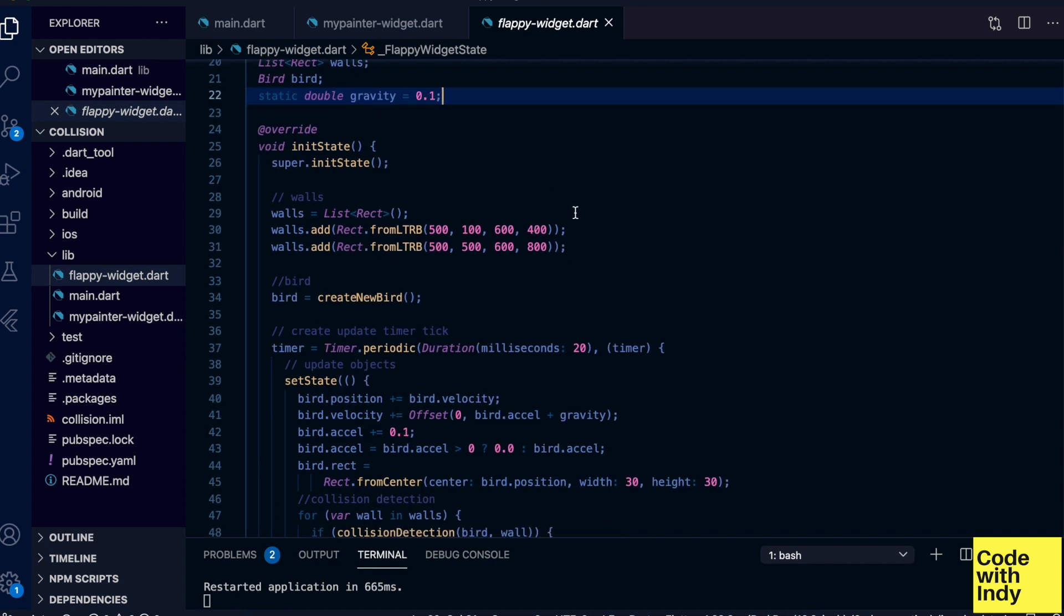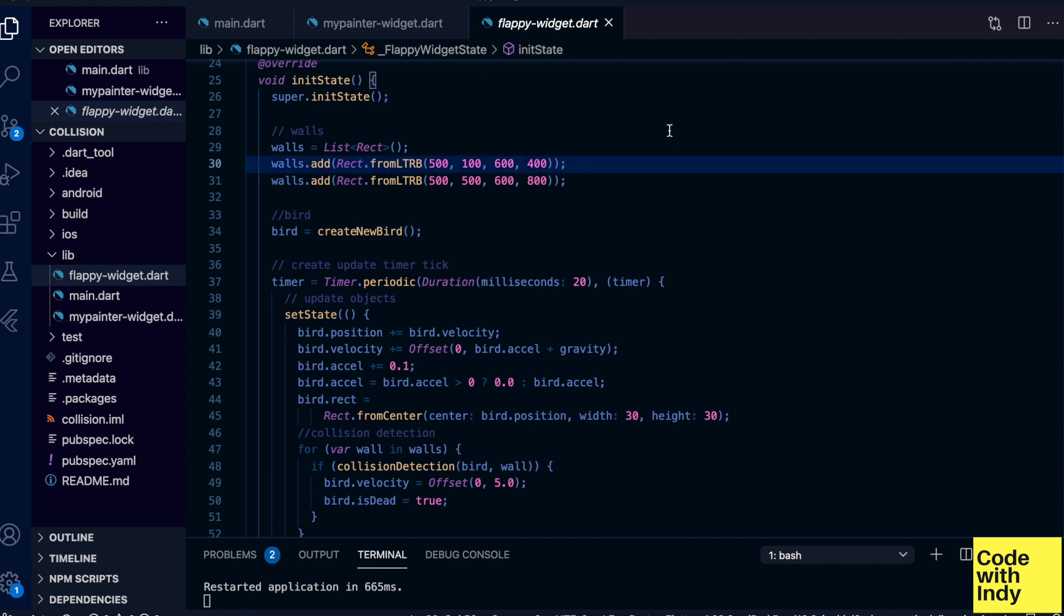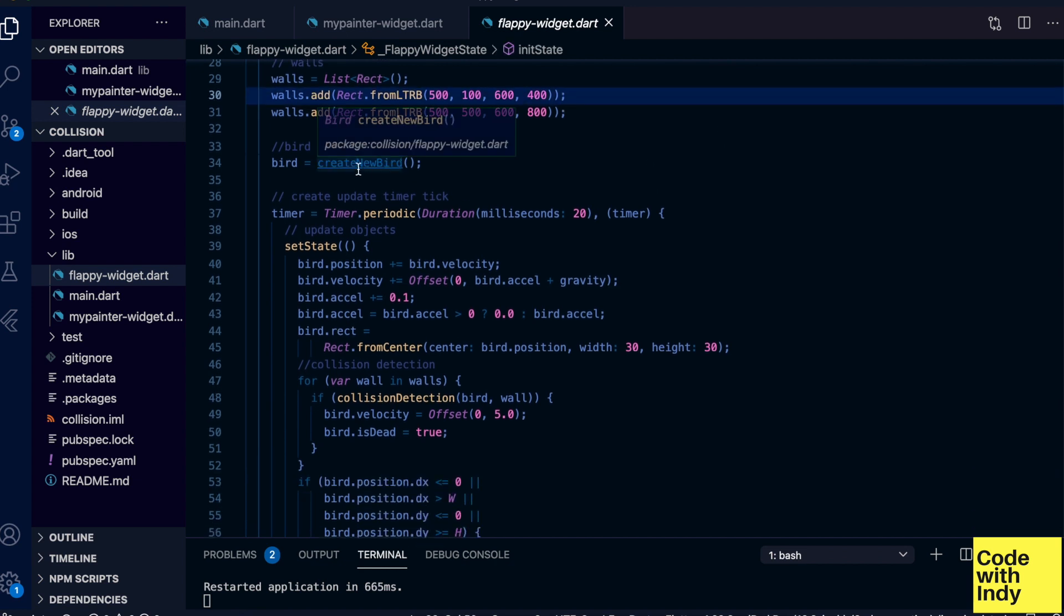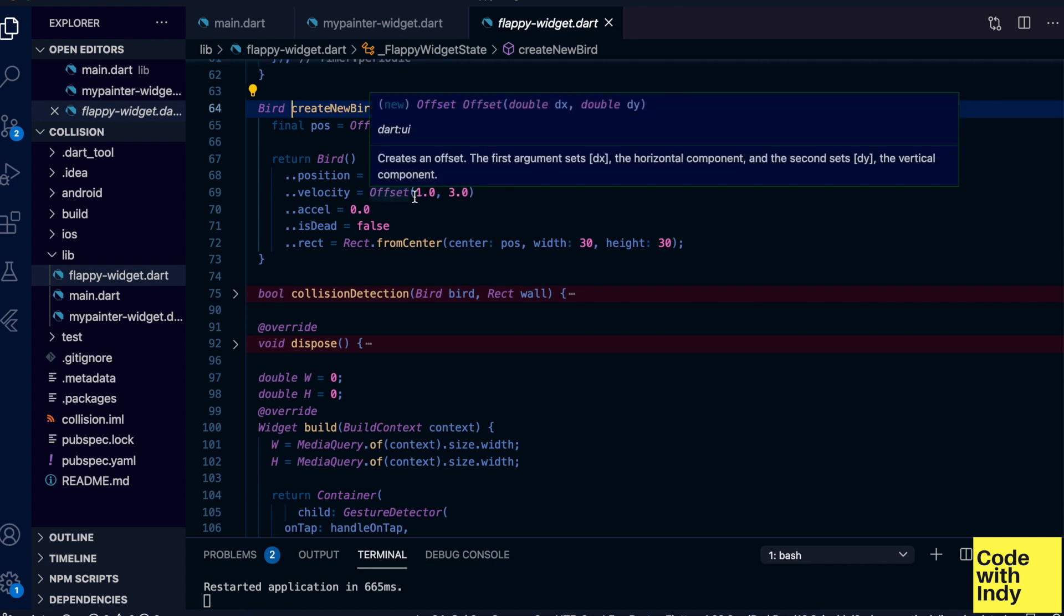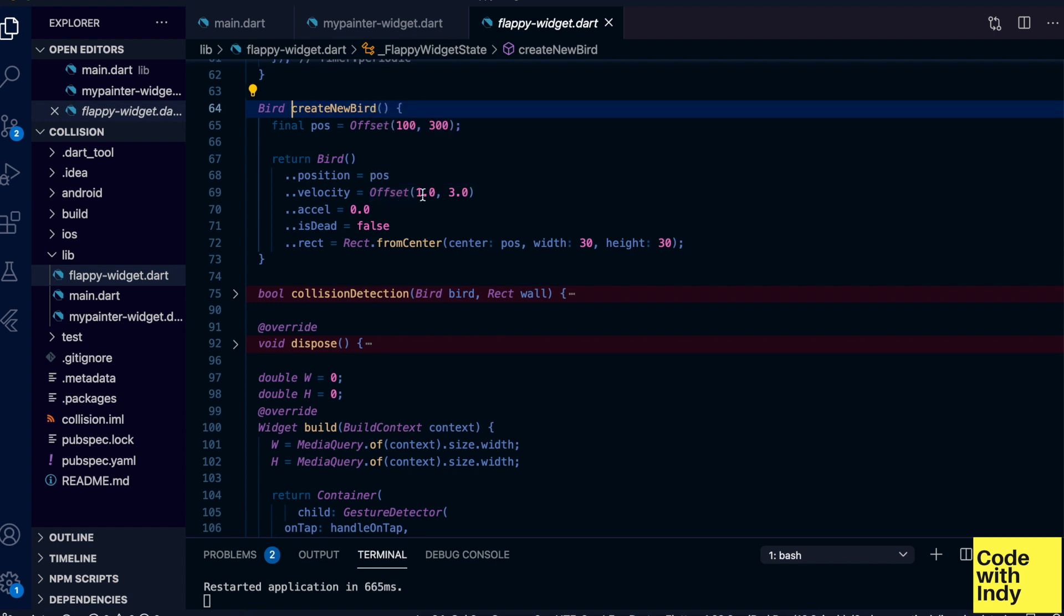So, I'm going to create a list of walls. Currently, I have only two. Then, I create a new bird. Give it an initial position, a velocity, acceleration of zero. This acceleration is what changes when we tap on the screen.